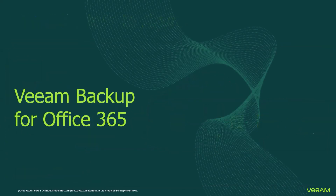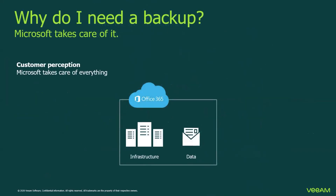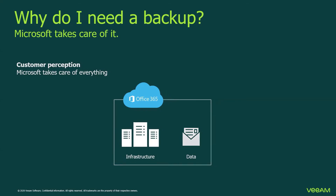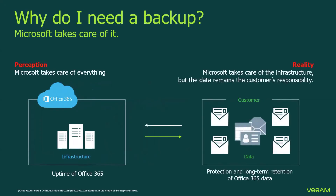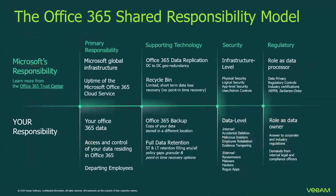Microsoft provides an array of powerful services within Office 365, but a comprehensive backup of your Office 365 data is not one of them. The common perception is that Microsoft takes care of both infrastructure and data. In reality, Microsoft takes care of the infrastructure and ensures the Office 365 service is available, but the data — whether Exchange Online, OneDrive for Business, SharePoint Online, or Teams — is the customer's responsibility. This is what is referred to as the shared responsibility model. Microsoft provides geographic redundancy, but that is from a single source, and there is only short-term retention via the recycle bin, not a true point-in-time recovery.